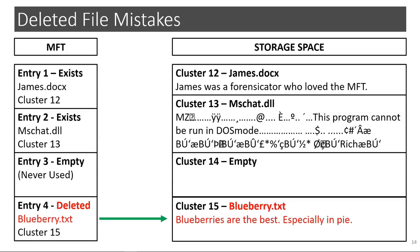Here in the fourth MFT record, we see metadata referring to a file called blueberry.txt that lives at cluster 15 in the storage area of the hard drive. The MFT record indicates that the file has been deleted and the MFT entry has not been used for new data. If we go to cluster 15, we can see that the blueberry.txt file still exists in its entirety because that space has not been overwritten by new data.